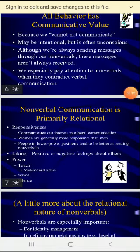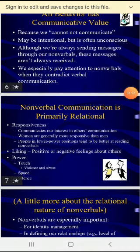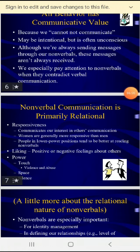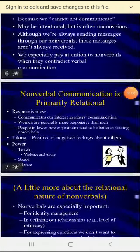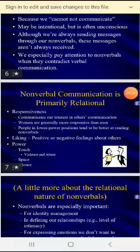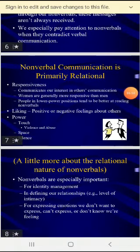Although we are always sending messages through our nonverbal behavior, these messages aren't always received well — the other person doesn't always perceive them. For instance, when you want to communicate with a friend, teacher, or family member using signals and gestures, that person often doesn't understand what you are trying to communicate — this mostly happens when your mother is trying to give you signals in front of guests. We especially pay attention to nonverbals when they contradict verbal communication.